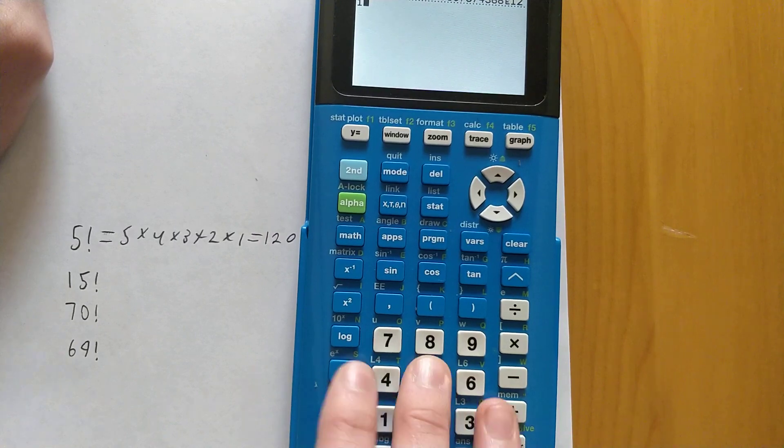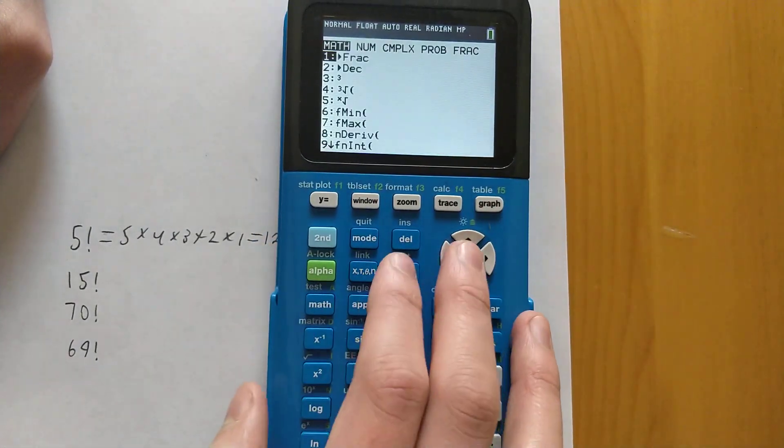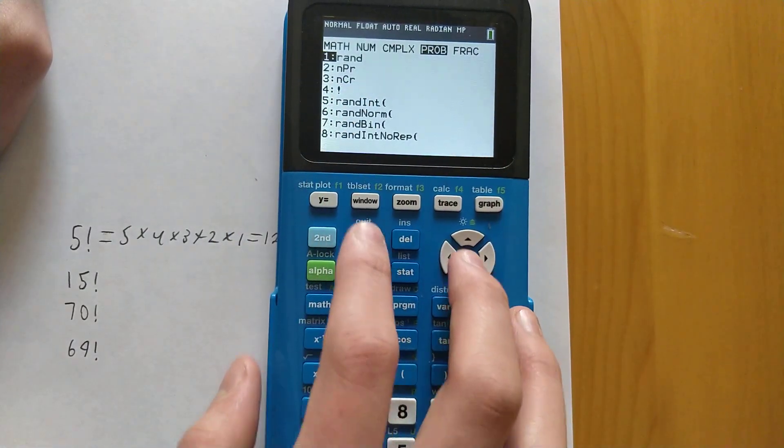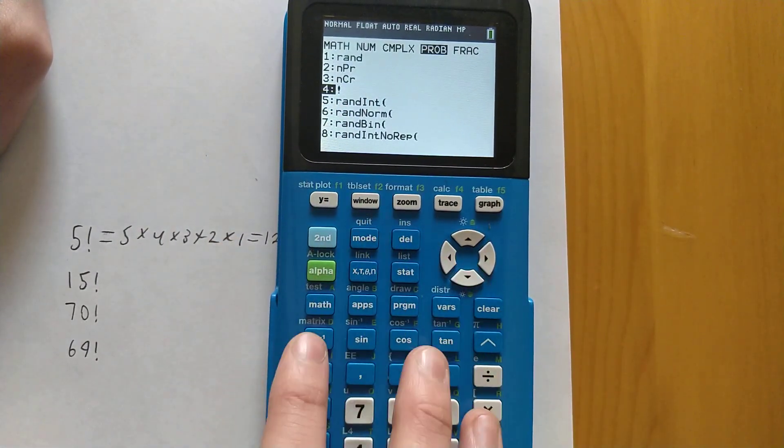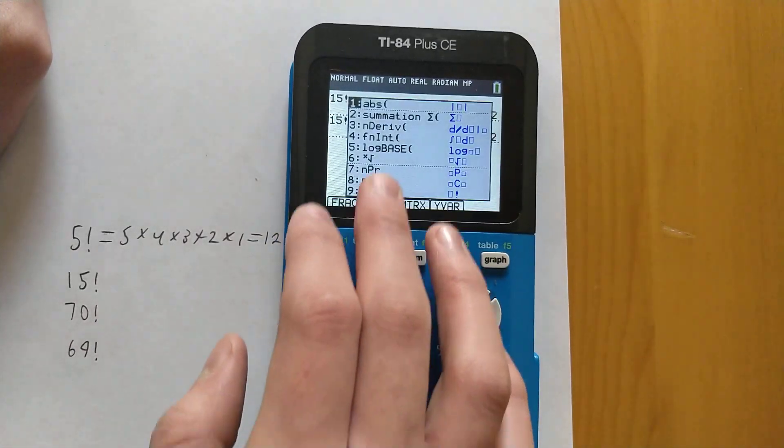Some other tutorials might say that the way to get the factorial key is to type in the number, press math, and then go to probability and select the factorial from the fourth option here. But I just prefer the alpha F2 option here.